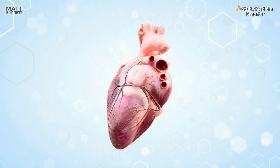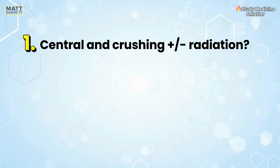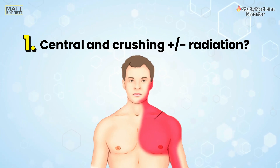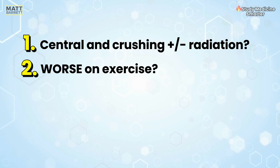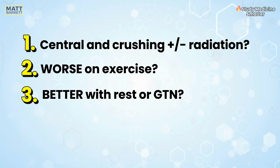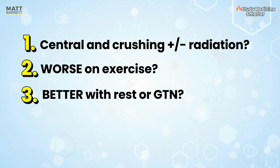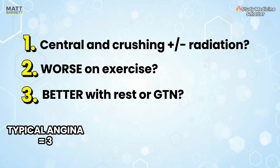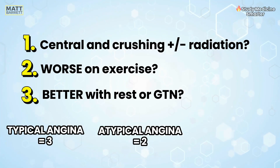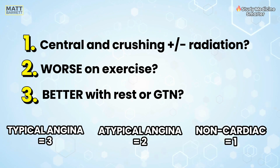Let's start with the four cardiovascular causes. Is this actually cardiac sounding chest pain? That's made up of three factors. Firstly, is it central and crushing and perhaps radiating down the left arm, the left side of the neck or the jaw? Second, is it made worse with exercise? And third, is it relieved by rest or GTN? If it ticks all three then we call that typical angina. If it ticks two we call that atypical angina. If only one, then we call that non-cardiac chest pain.